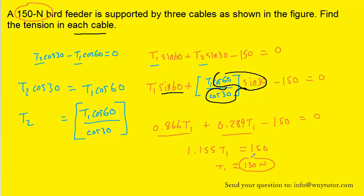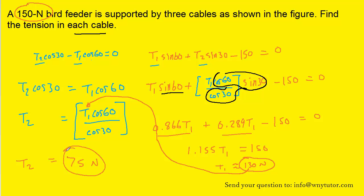To find T2, substitute 130 Newtons in for T1 in the first equation. When you do that, you should get 75 Newtons for T2. And we can't forget the other tension, which was equal to mg, equal to 150 Newtons.